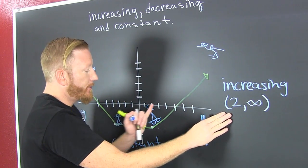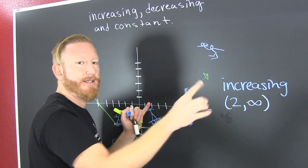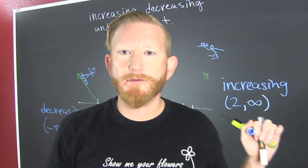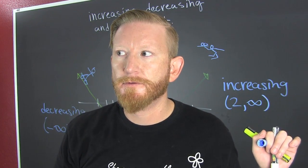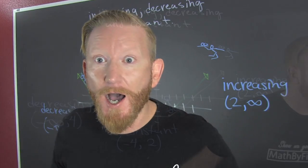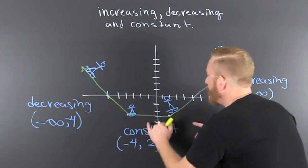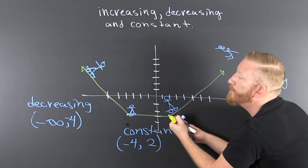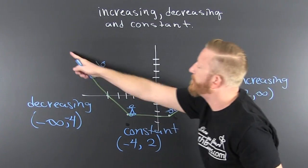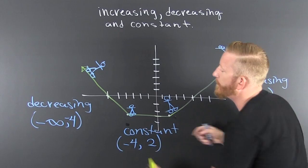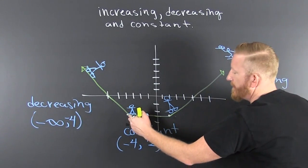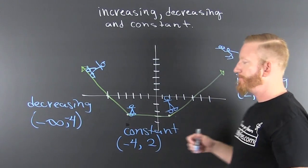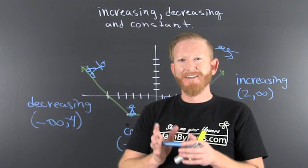You're increasing from two to infinity. You're constant from minus four to two, meaning no change in your function. And your function is going down from left to right when you're going from minus infinity to minus four.